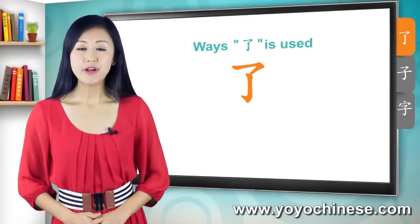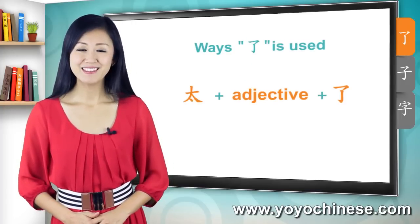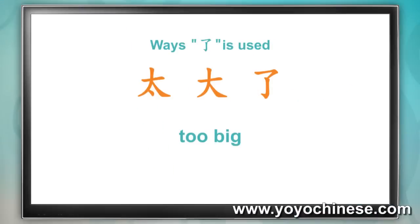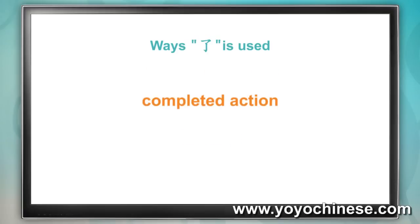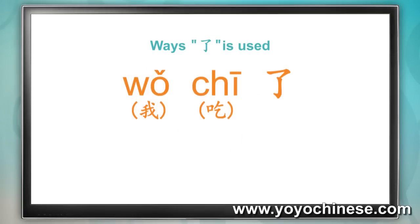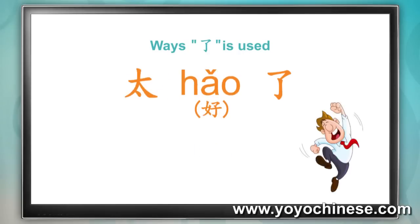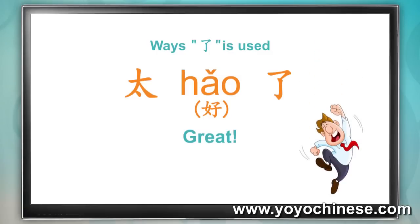Let's take a look at how 了 is used. One way is in the phrase 太 adjective 了. Now read this with me: 太大了. Good job! You know all of those characters now. Another way to use 了 is to demonstrate completed action, like in the sentence 我吃了 — I ate. Got it? 太好了. Great. That's our first character.